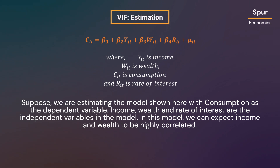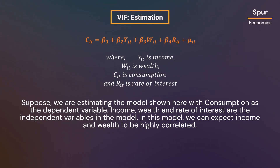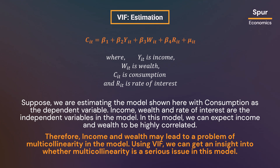Suppose we are estimating the model shown here with consumption as the dependent variable. Income, wealth, and rate of interest are the independent variables in the model. In this model, we can expect income and wealth to be highly correlated. Therefore, income and wealth may lead to a problem of multicollinearity in the model. Using VIF, we can get an insight into whether multicollinearity is a serious issue in this model.